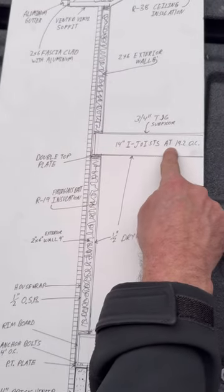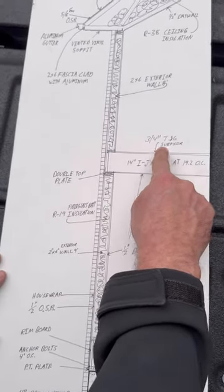The second floor has 14 inch eye joist 19.2 on center with eight foot tall two by six walls.